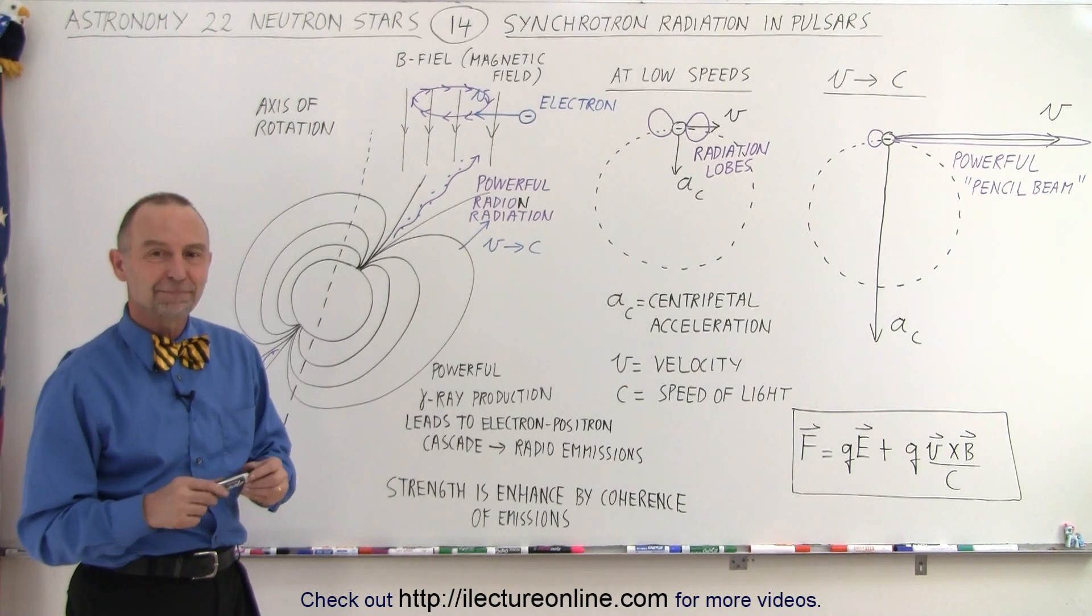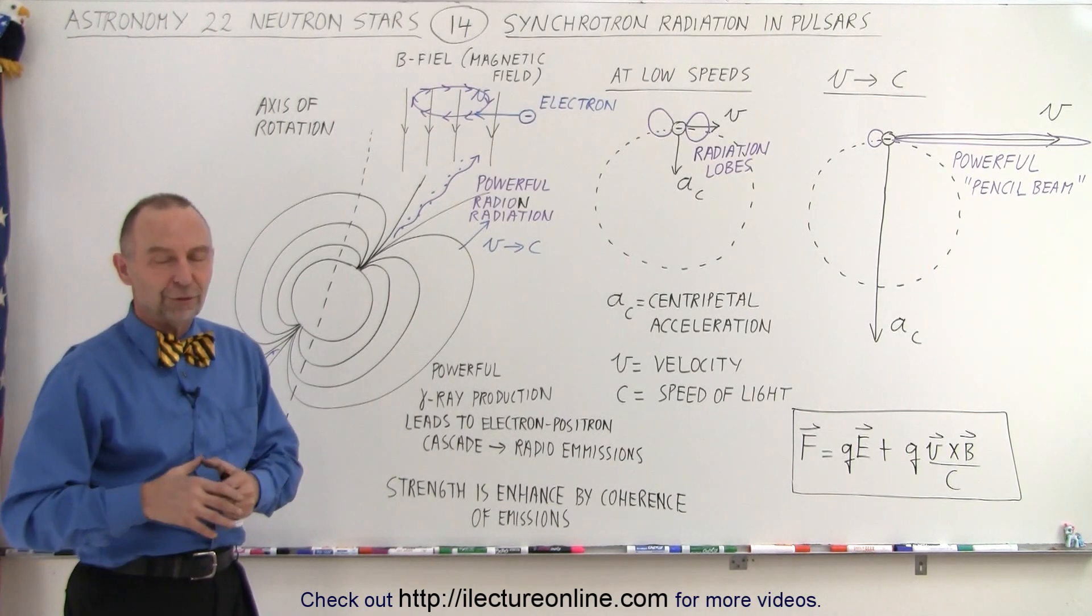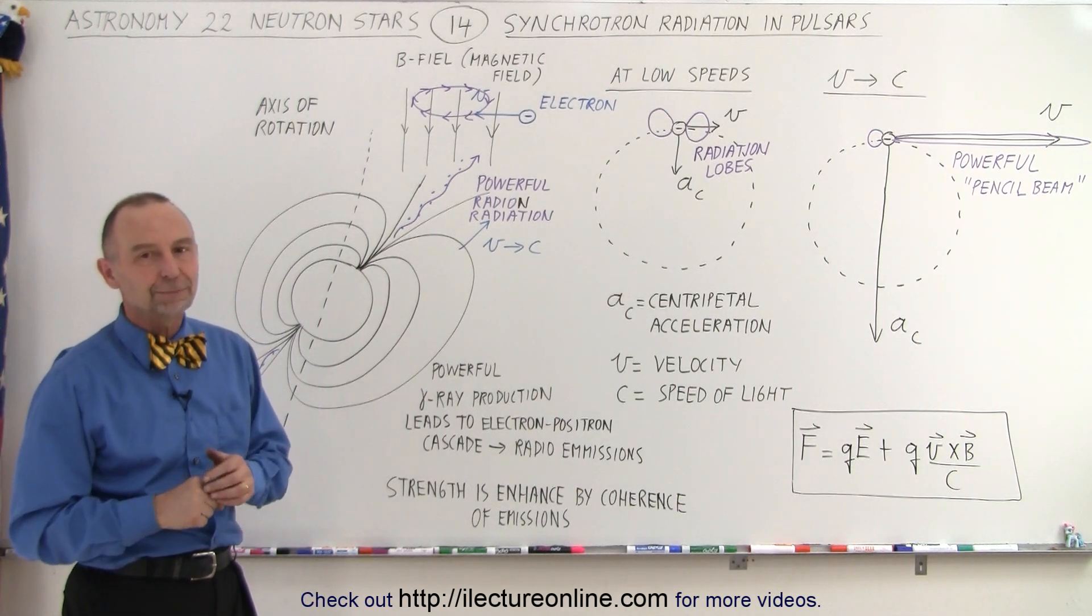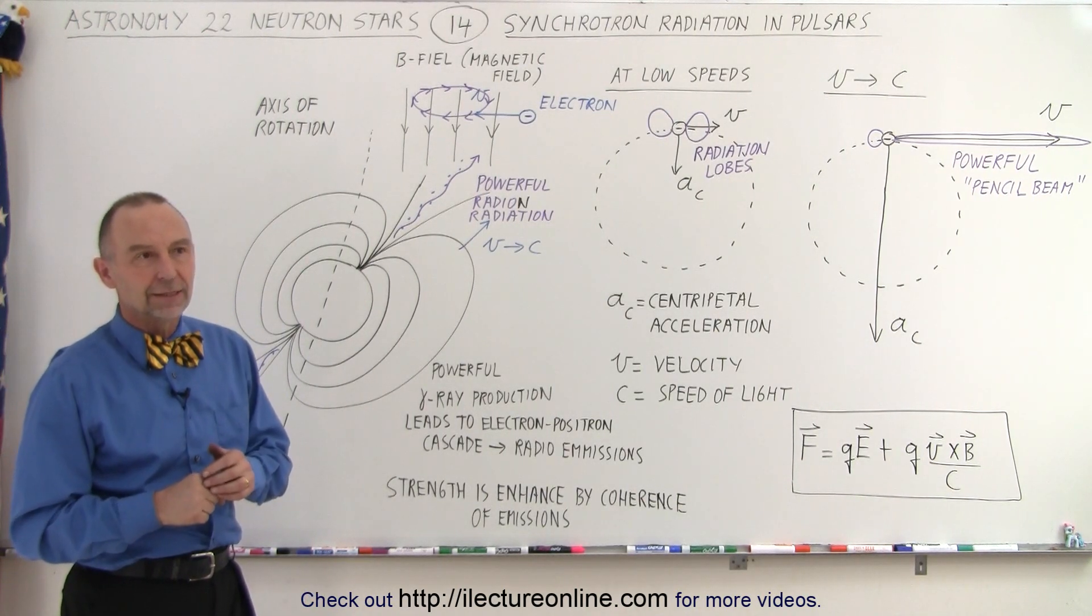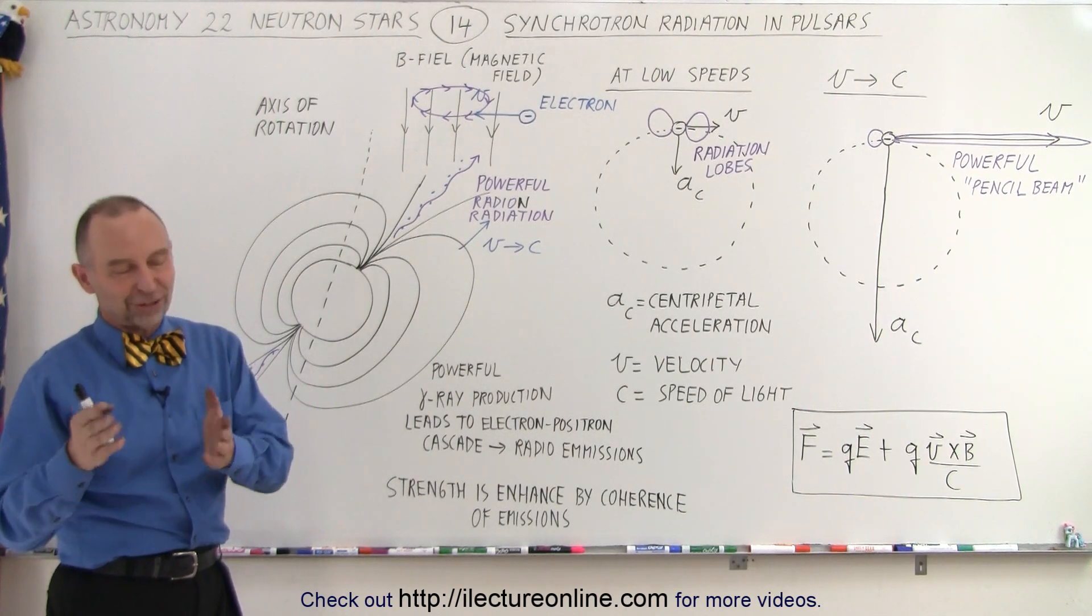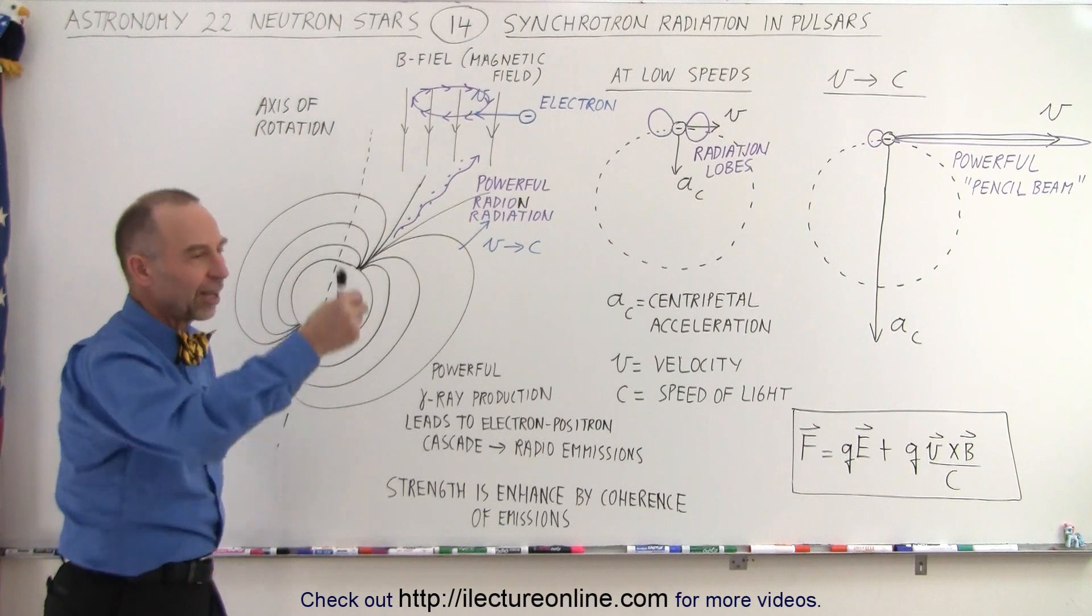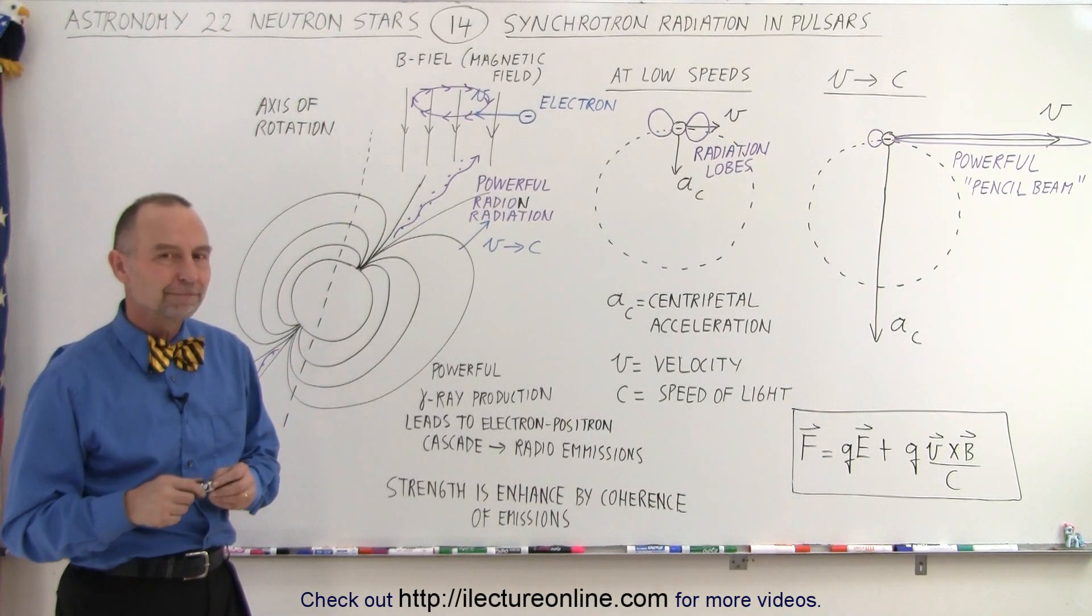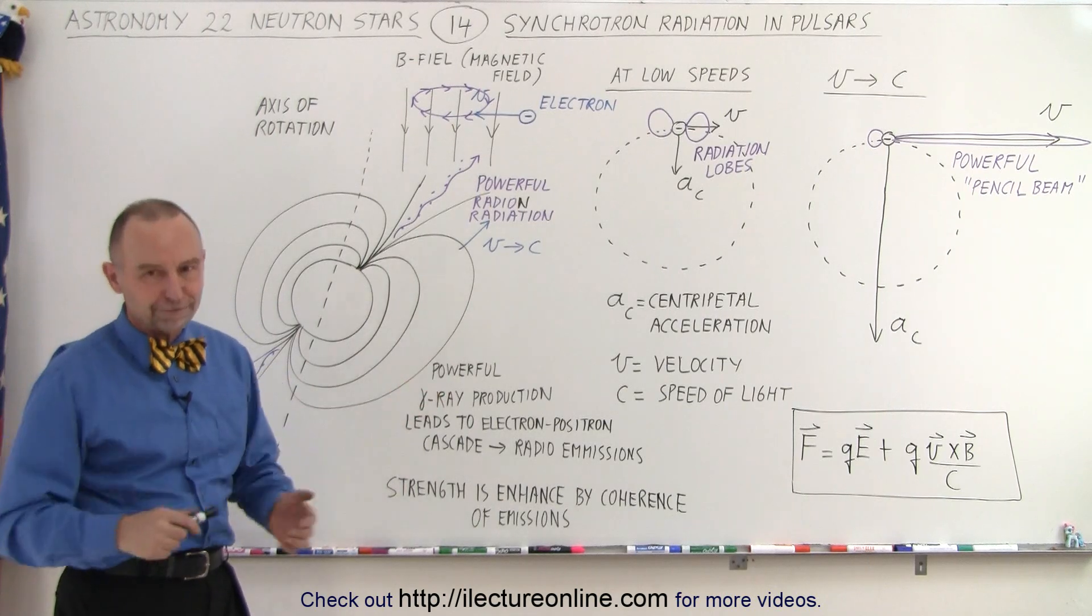If it wasn't for the charged electrons shooting out at high speeds, we wouldn't see that. It's not a magnetic field that we see, it's electrons shooting out. It's the charges that are being shot out near the speed of light that produce the electromagnetic radiation. Hence the pulsar.